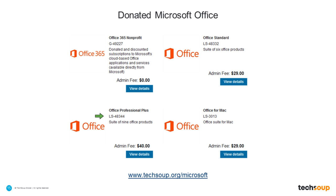Software Assurance also allows you to downgrade. So if you have Windows 10 and need to back up to Windows 8 because you have hardware or software that isn't compatible, you can step back one version. You can also get multi-language packs — so if you serve a community with people who speak Vietnamese, Chinese, French, Spanish, or German, you can access multi-language packs at no additional cost.